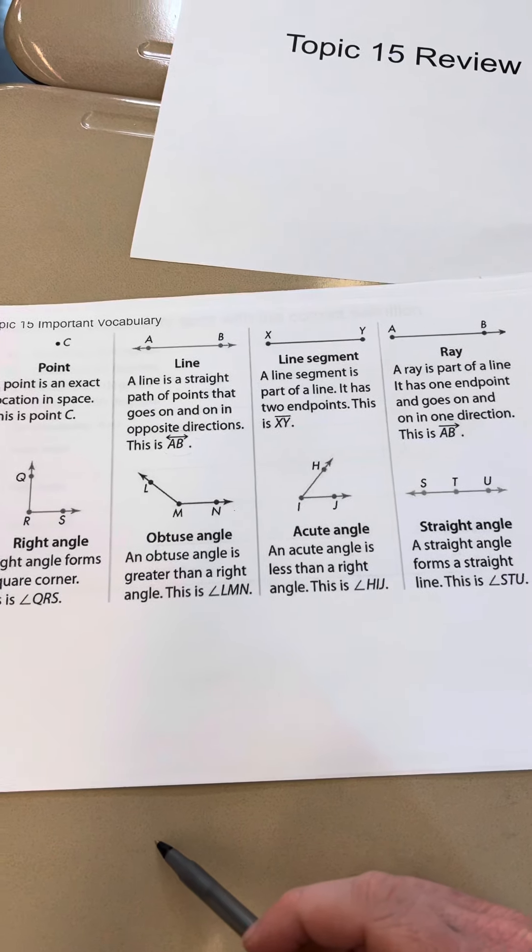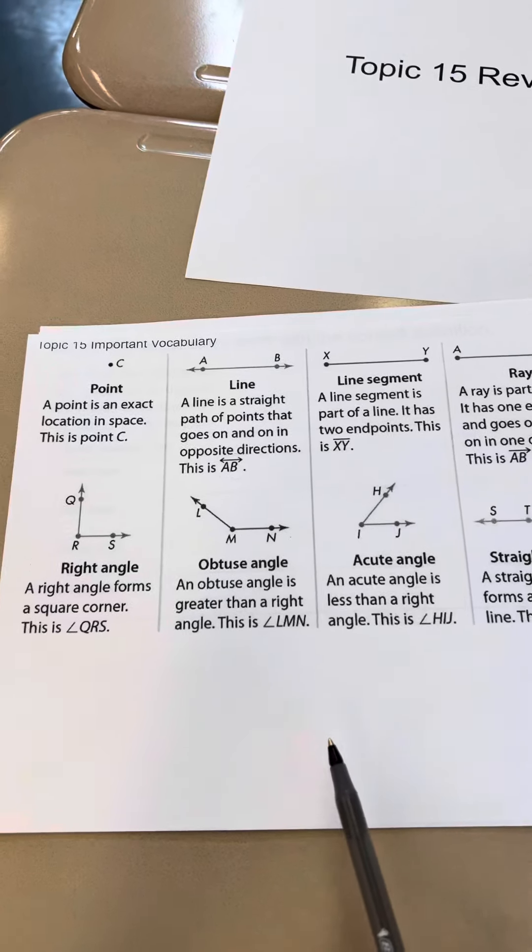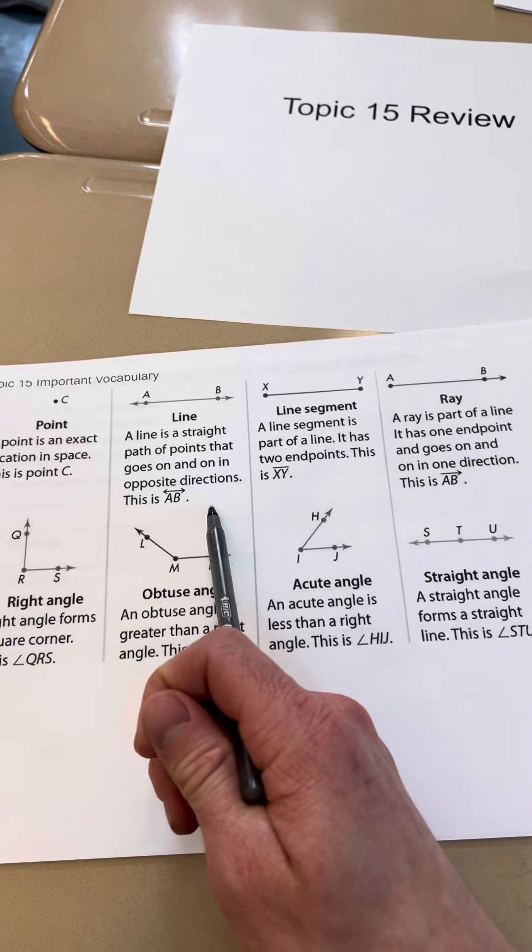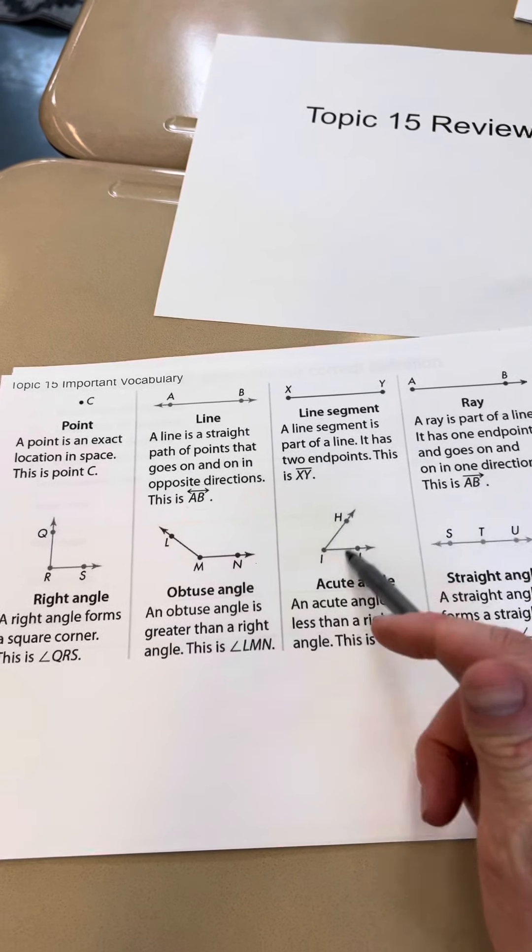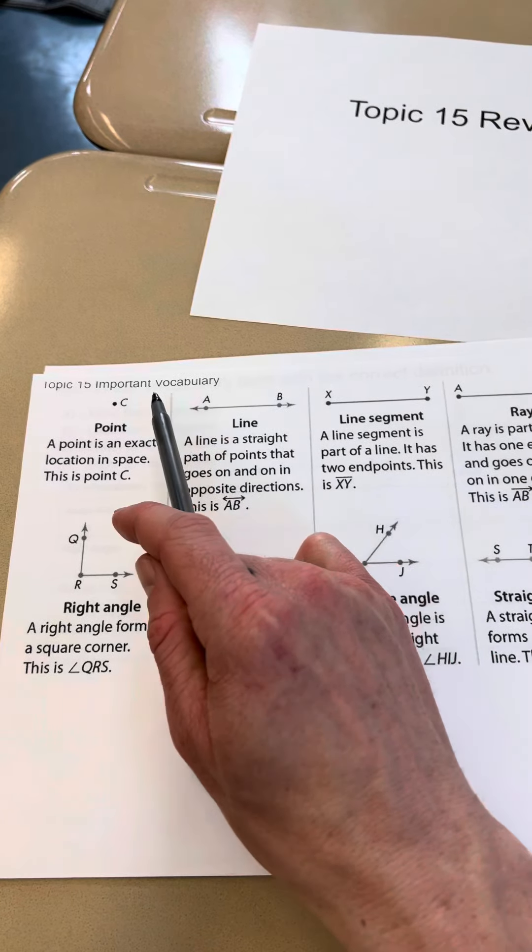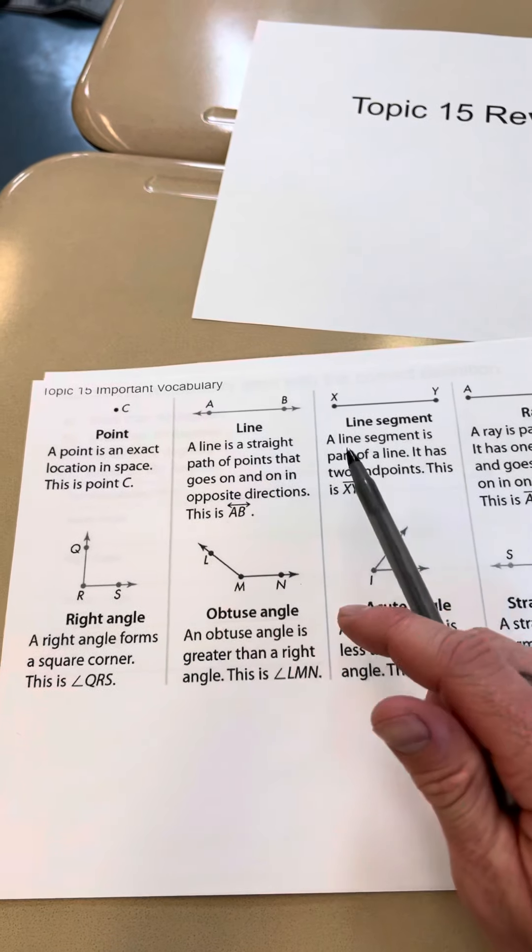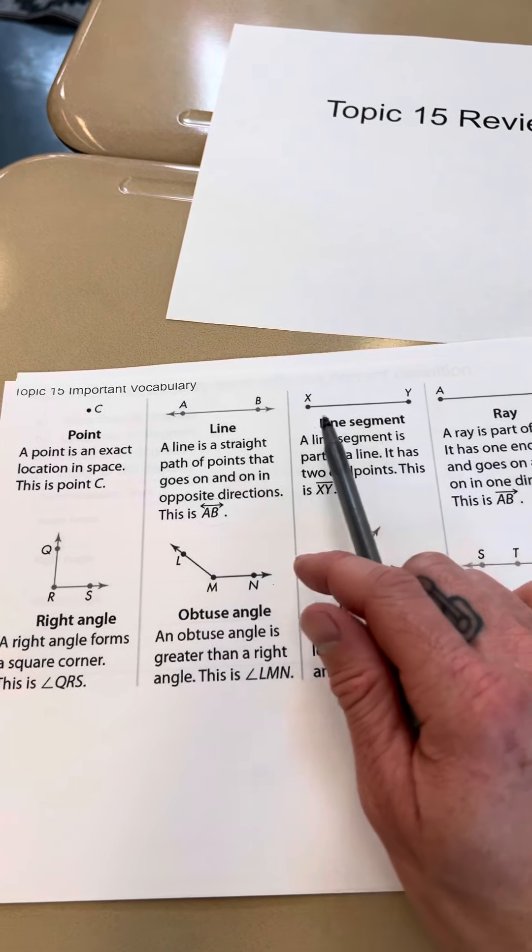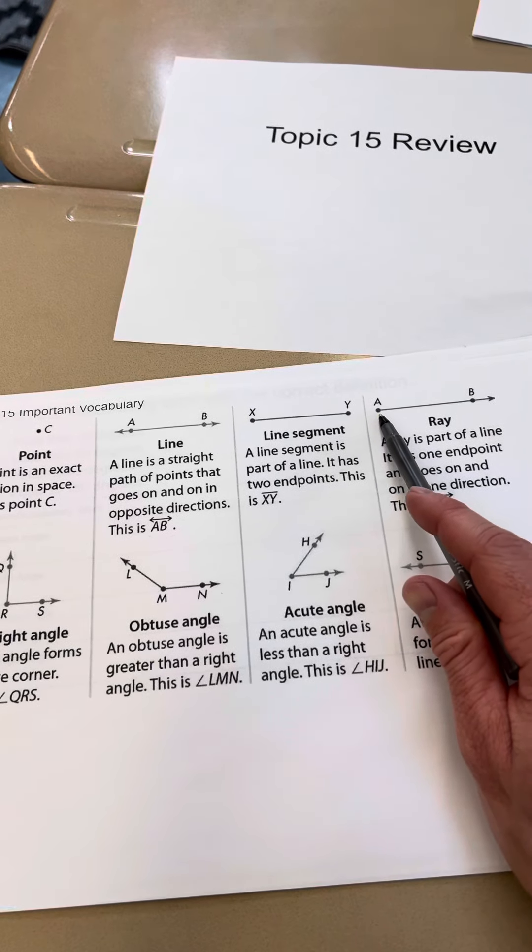This is the vocabulary portion of the Topic 15 review. Make sure to review the difference between lines, line segments, and rays. Lines go on forever past the points. Line segments are only between the points. Rays start at a point.